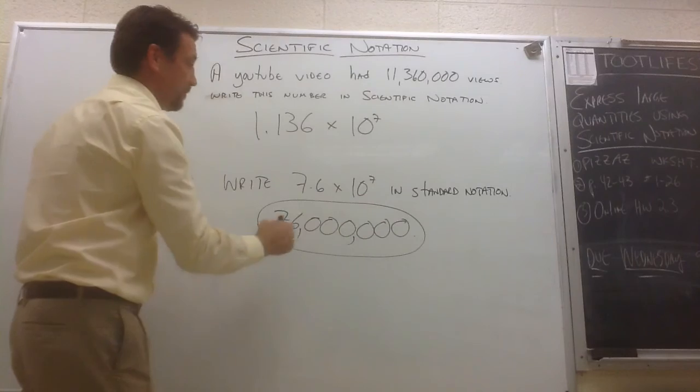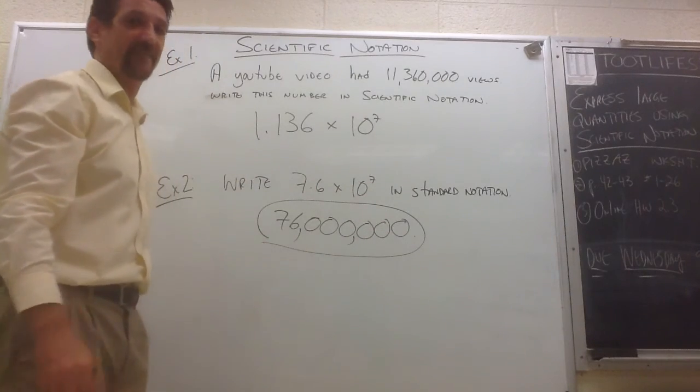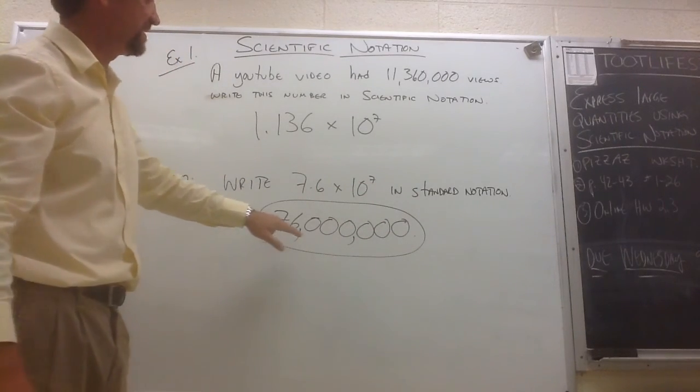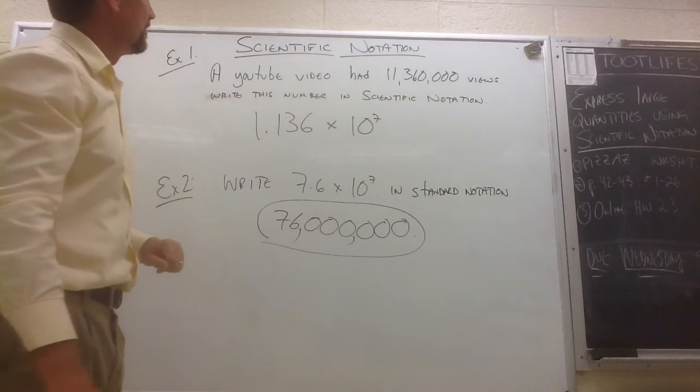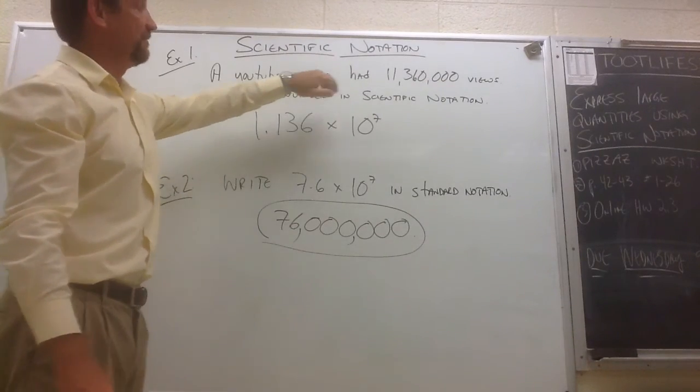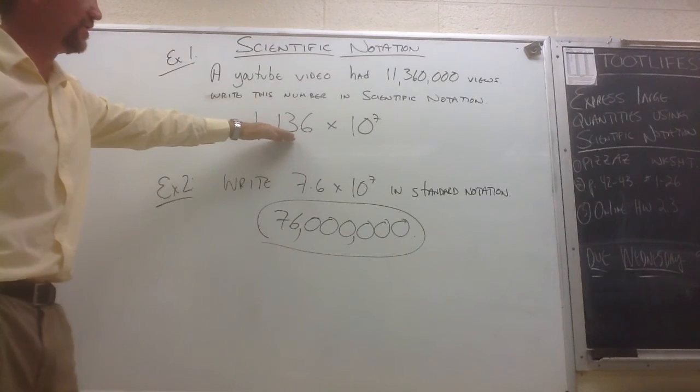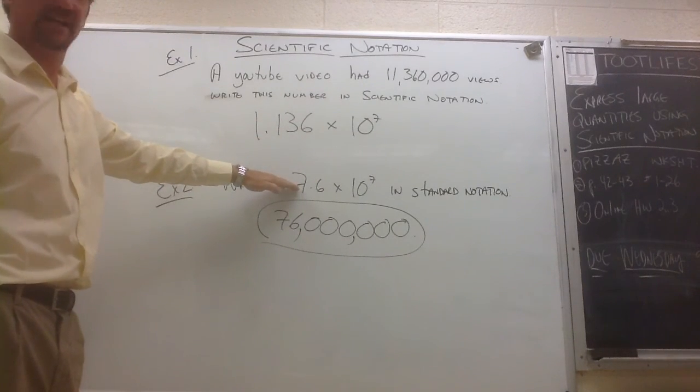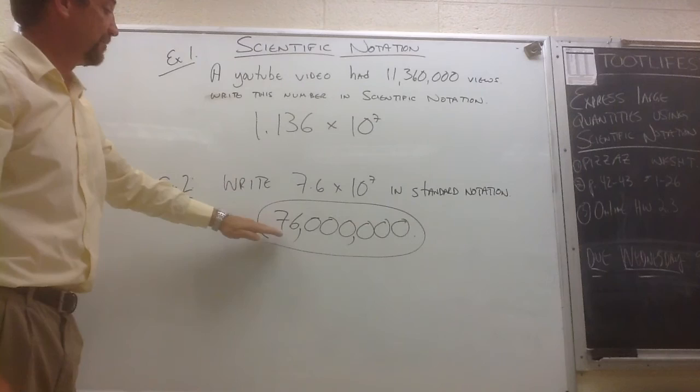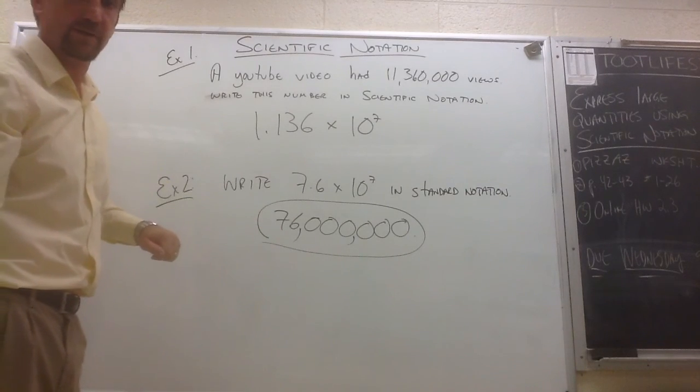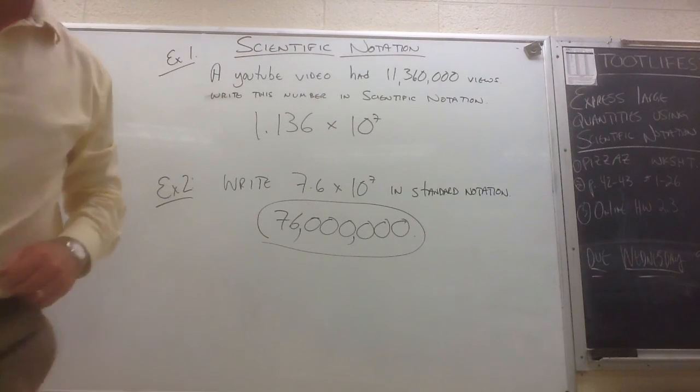And know that 7.6 times 10 to the 7th in standard notation would be 76 million. So there's how you can take a very large number and write it into scientific notation, or take a number that's written in scientific notation and write it out as a large number. Okay. Get some practice.